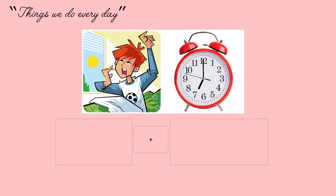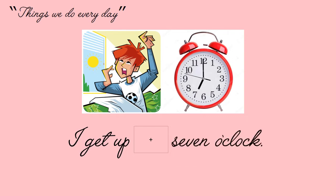Things we do every day. Let's look at the pictures and tell me what they are. The first picture is... I get up. What about the second picture? What time is it? 7 o'clock. Now, I want you to add both pieces of information in one sentence. To do that, we need to add a little word. We need to use the word "at". So the sentence is going to be formed like this: I get up at 7 o'clock.